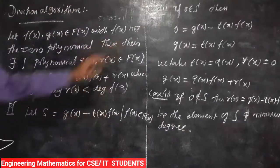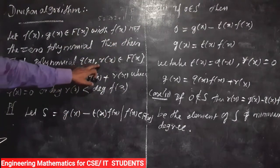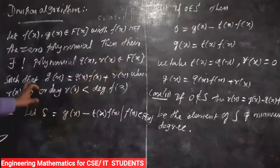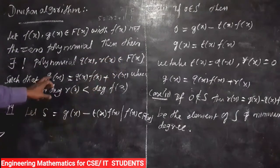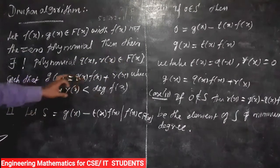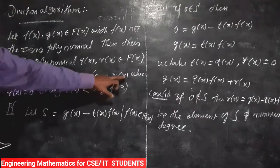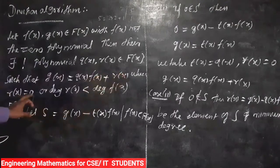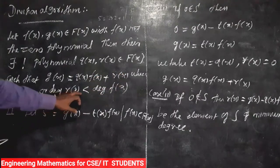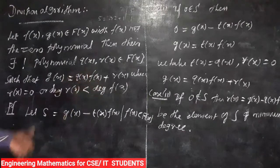Then there exist unique polynomials q(x) and r(x) belonging to F[x] such that g(x) equals q(x) times f(x) plus r(x), where either r(x) equals 0 or the degree of r(x) is less than the degree of f(x).